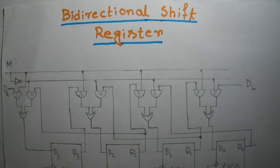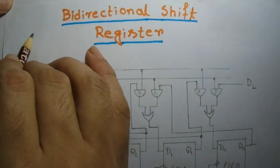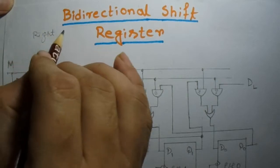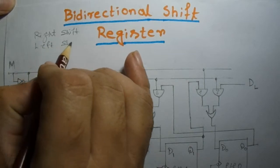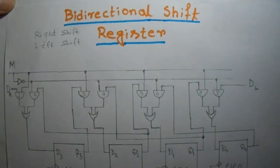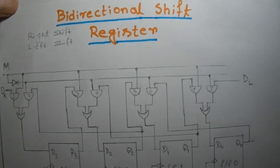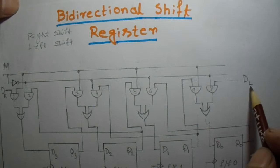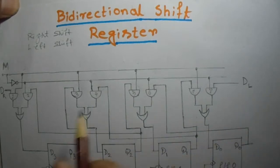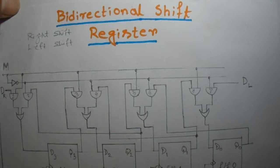Why is it named the bi-directional SIP register? Because it has two directions — one is right shift mode and another is left shift mode. That means whatever input you give here, that is DR, it is shifted from left to right, and whatever input you give here, that is DL, it is shifted from right to left. That is why its name is bi-directional SIP register.